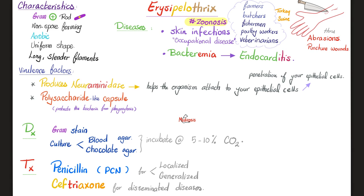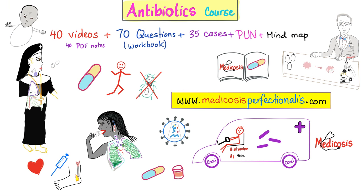How can we diagnose Erysipelothrix? By gram stain, because it's a gram-positive rod. By culture on blood agar or chocolate agar — make sure to incubate at 5–10% concentration of carbon dioxide. How can we manage it? Penicillin for mild cases, ceftriaxone for disseminated severe cases.